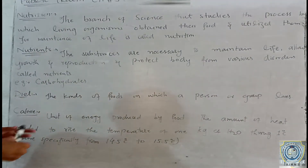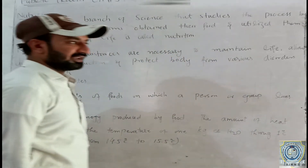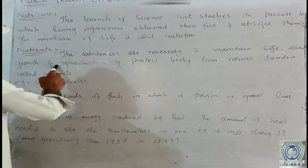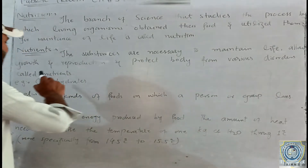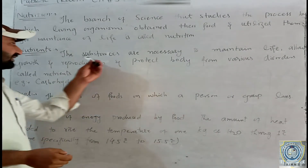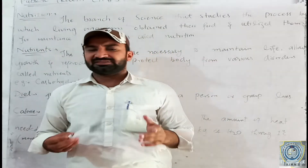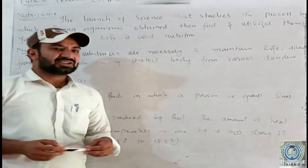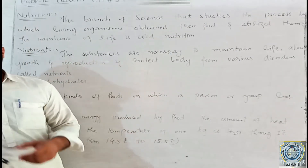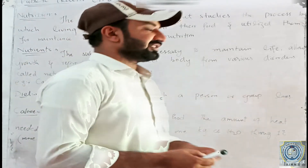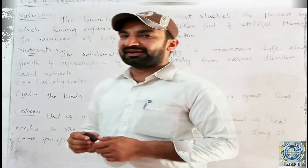The substances necessary to maintain life — although growth and production can protect the body from various disorders — are called nutrients. These substances are necessary to maintain life, and the body requires them for growth and maintenance.